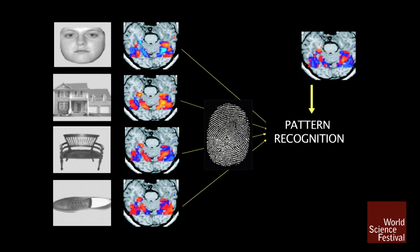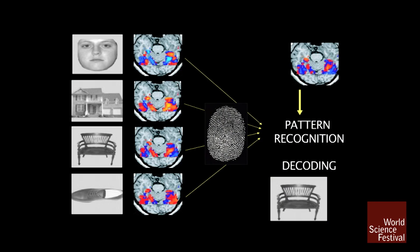In this case, for example, you could possibly guess it from the audience — does anyone have an idea what the person is thinking? You can see it was actually a chair.